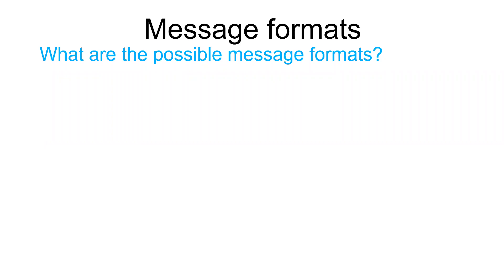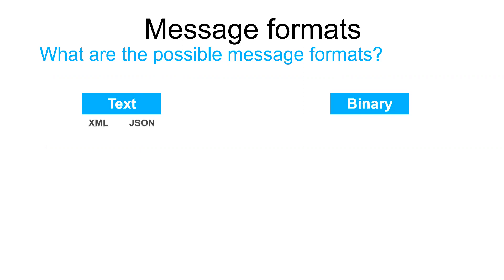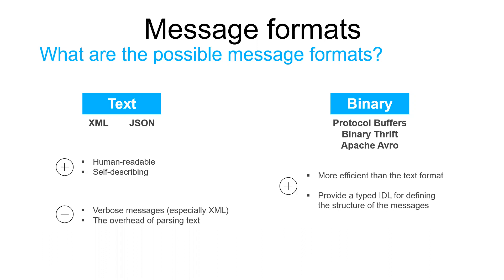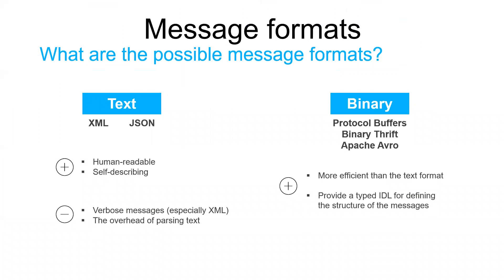The first thing to consider is using a cross-language message format — even if you are writing your microservices in a single language today, it's likely that you will use other languages in the future. There are two main categories: text and binary. Text-based formats such as JSON and XML are human-readable and self-describing, but a downside is that messages tend to be verbose (especially XML) and there is overhead in parsing text when messages are large. Consequently, if efficiency and performance are important, you may want to consider a binary format. Popular binary formats include Protocol Buffers, Thrift, and Avro — all provide a typed interface definition language and a compiler that generates serialization/deserialization code. For more details on these technologies, check the links in the description.